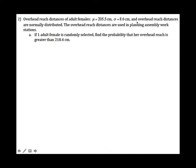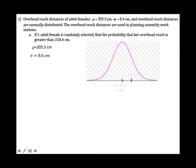Example 2: Overhead reach distances of adult females — we have the population mean and standard deviation, and the overhead reach distances are normally distributed. Part A: if one adult female is randomly selected, find the probability that her overhead reach is greater than 218.4. Here the sample size n equals 1, so we don't have to use the Central Limit Theorem — we apply the material from Section 6.2. The mean and standard deviation don't change.